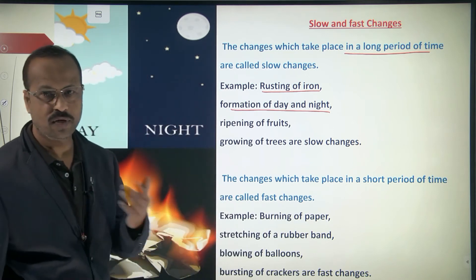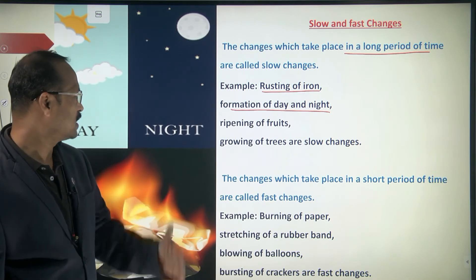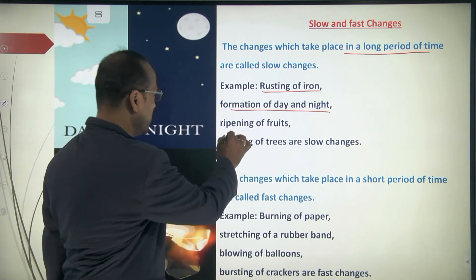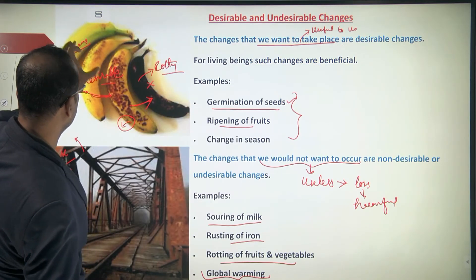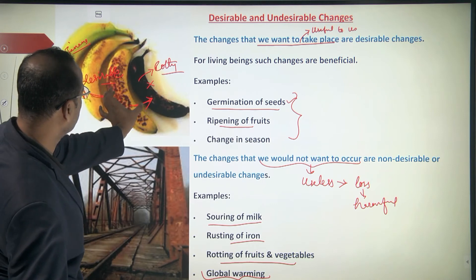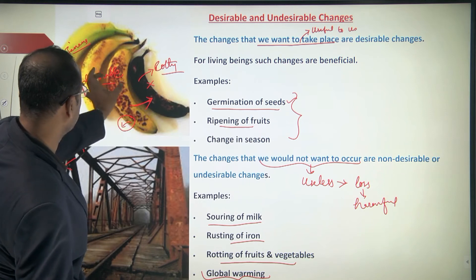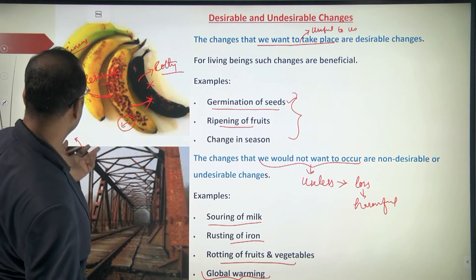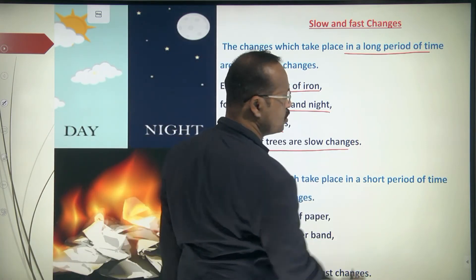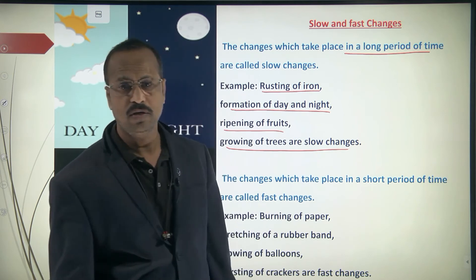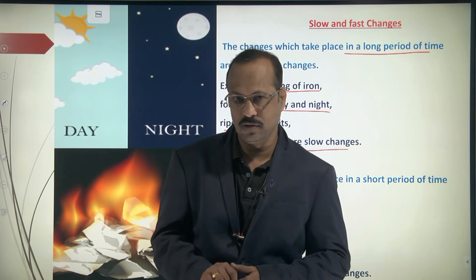Ripening of fruit is also slow — a banana takes one day to go from one stage to the next, then another day, and another, so it changes over 24-hour periods. Growing of trees is also a slow change, taking many days. Even the growth of human beings is slow — in seventh class you are about 11 years old and it took 11 years to grow to your current height. That is a long time, so human growth is a slow change.